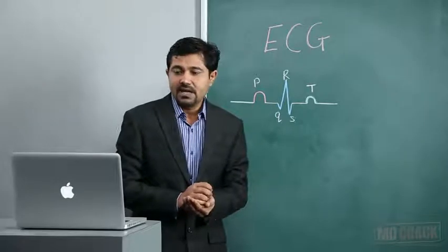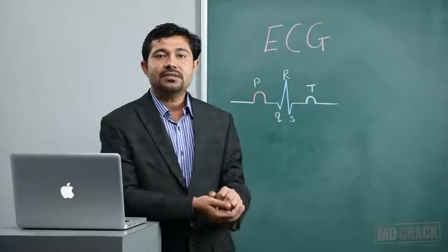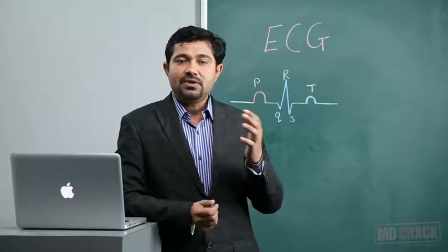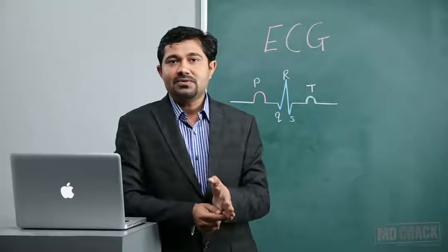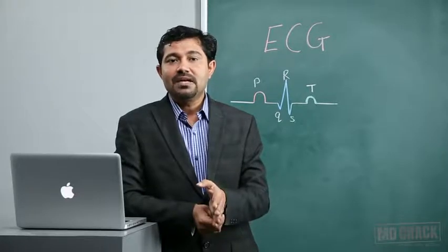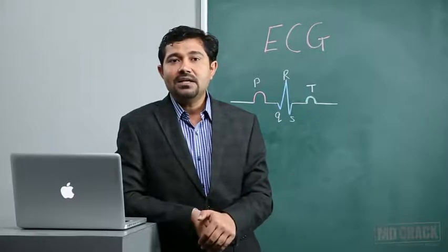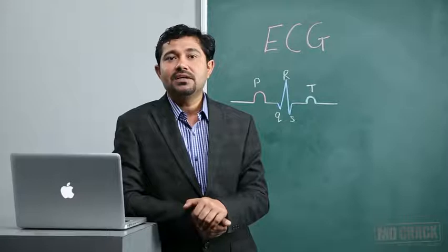Now we will see the basis of ECG generation - what exactly generates the P, QRS complex, and T wave. For this you have to remember the conduction pathway. Normally the action potential is generated in the SA node, spreads to the complete atria, goes to the AV node, then to the bundle of His, right and left bundle branches, Purkinje fibers, then spreads through the endocardium to the epicardium. The base of the heart is the last portion to get depolarized.